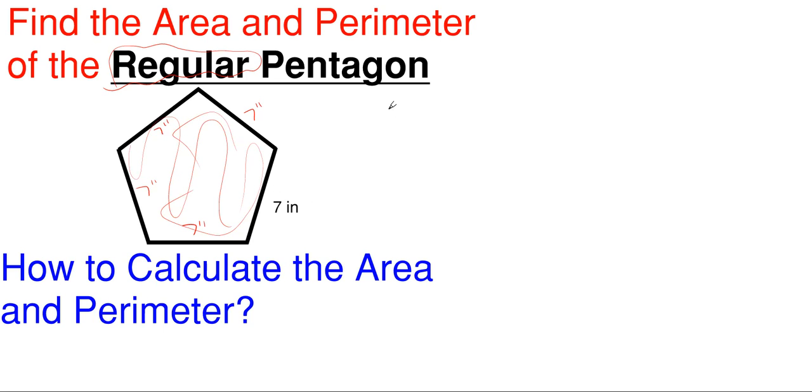This equation for a regular pentagon for its area will be one quarter times the square root of five times five plus two times the square root of five. All of that square rooted and then all of that multiplied by a squared, where a is just the length of your side.